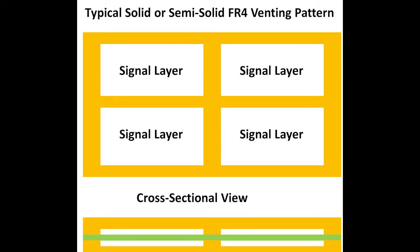Because of the high flow capability, venting patterns in FR4 inner layers are typically solid or nearly solid copper structures. Vertically stacked copper frames create high pressure regions around the periphery of a panel, thereby directing flow of the FR4 resin toward the center.